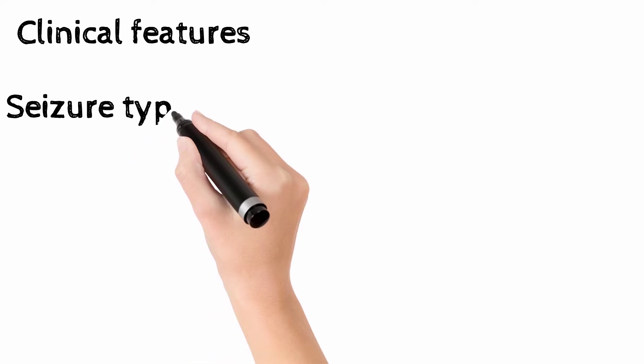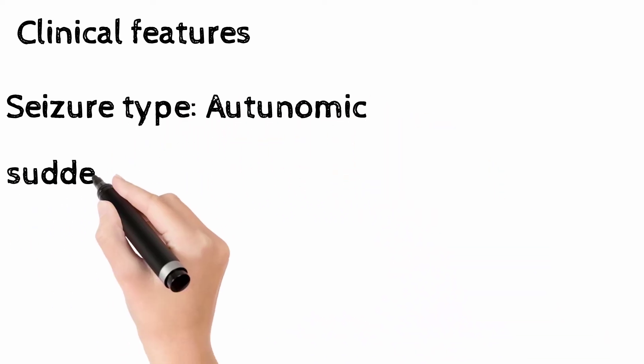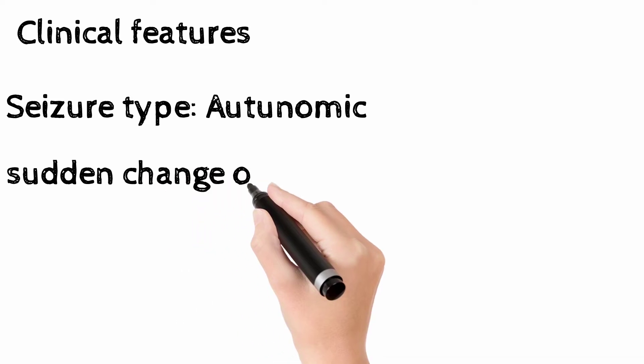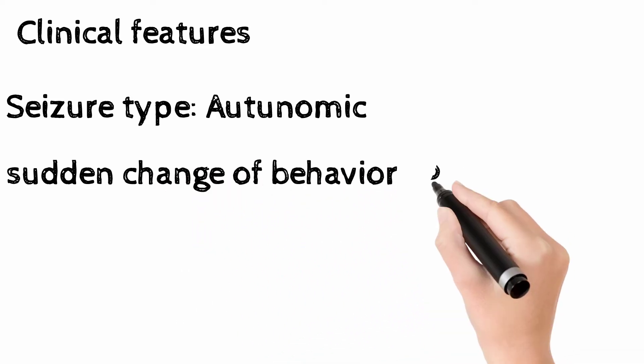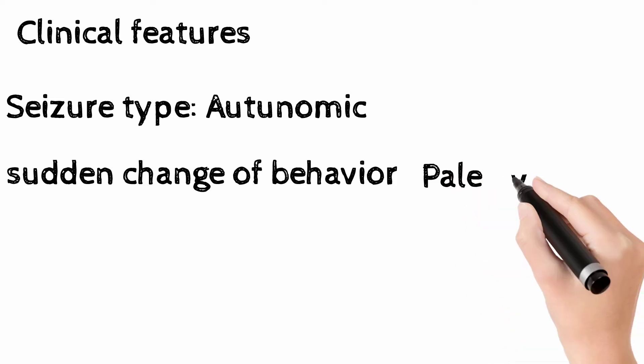Clinical features of Panartopolis syndrome: there is a seizure, and the type of seizure that occurs in this condition is autonomic type. When you observe the child, there is a sudden change in behavior, and at the time of the seizure the child looks pale. There are frequent episodes of vomiting.